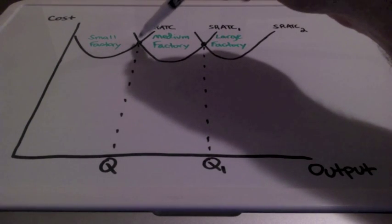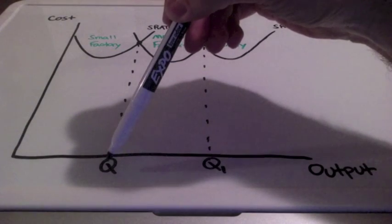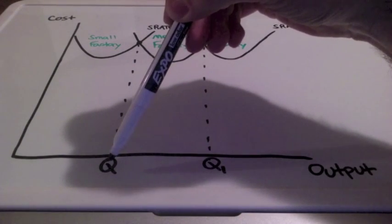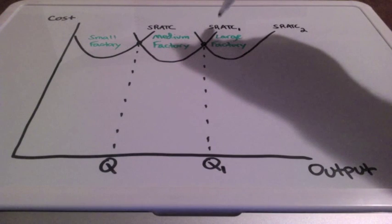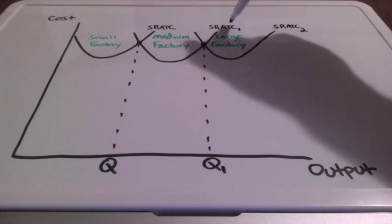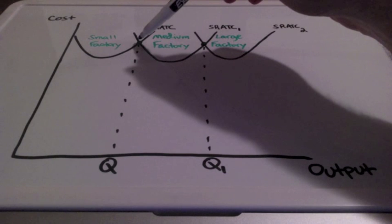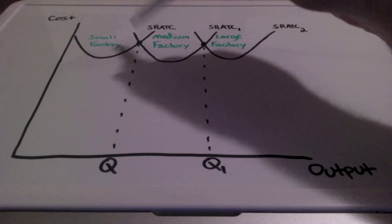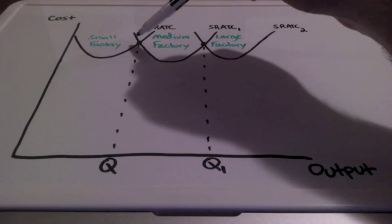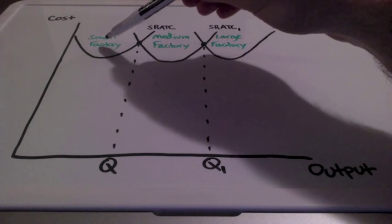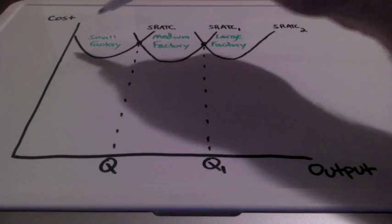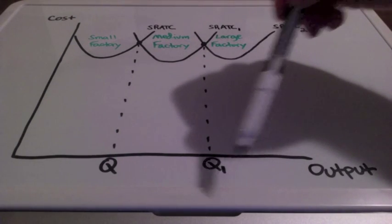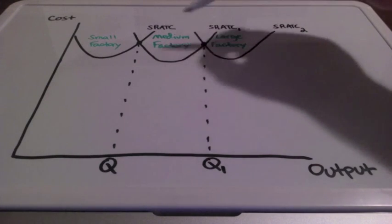Let's pay attention to this intersection, which represents Q — the quantity of output — between this short-run average total cost curve and short-run average total cost curve 1. This point is showing us that we are over-utilizing the space in the small factory, meaning we have limited space because of the concept of scarcity. So to produce more output, we may need to move to a larger size factory.